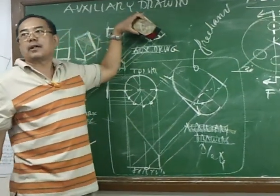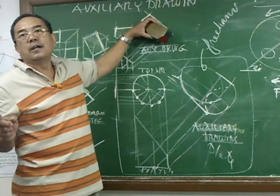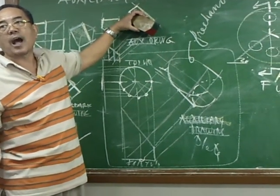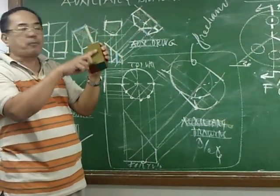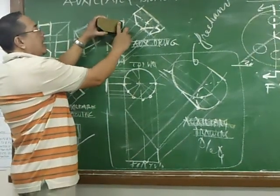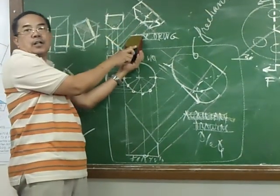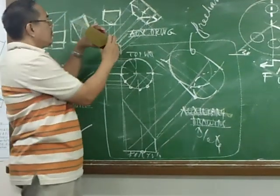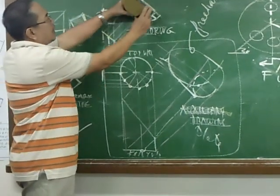What is the job of the auxiliary drawing? It's to show the true shape and size of an inclined surface, which otherwise is not shown in any of the normal views. You want to get the true shape and size of that? Well, use auxiliary drawing.